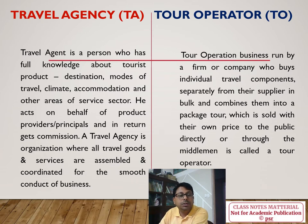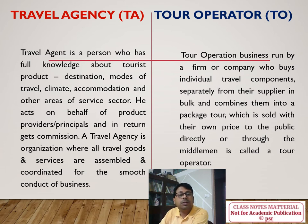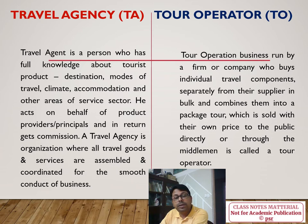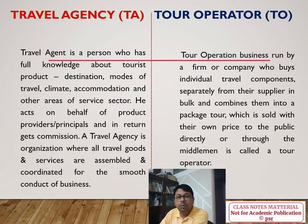A travel agent is a person who has full knowledge about tourism products, whether it is a destination, transportation, accommodation, or ancillary services — you must know about the concept of 5A. On behalf of the primary service provider, a travel agency acts as an intermediary between the primary service provider and the customer, assembling all products and services to offer to the client market.